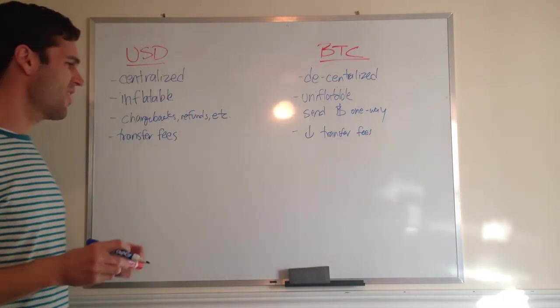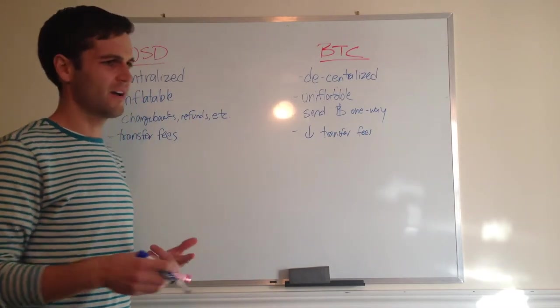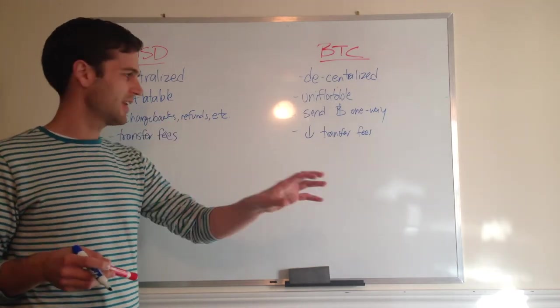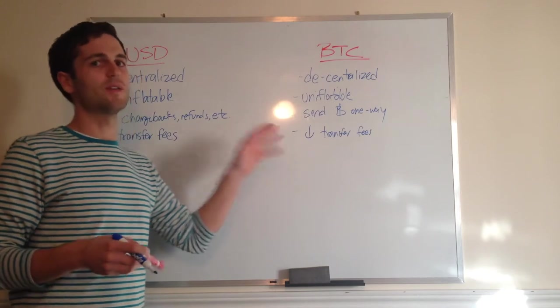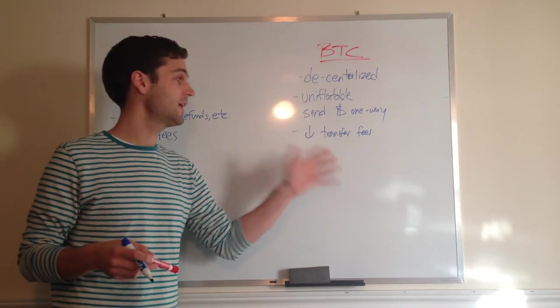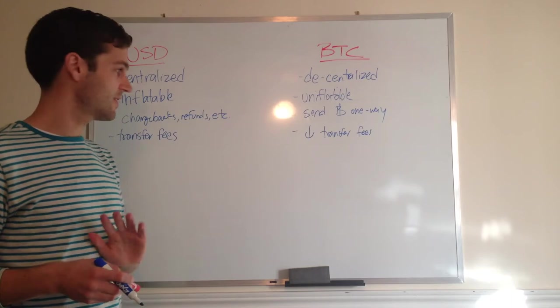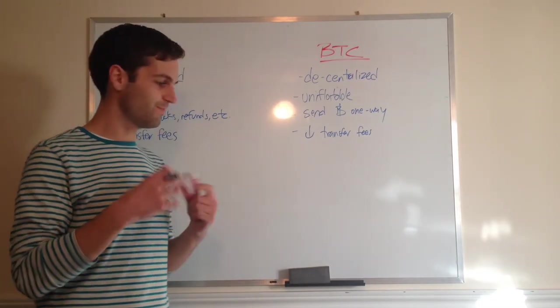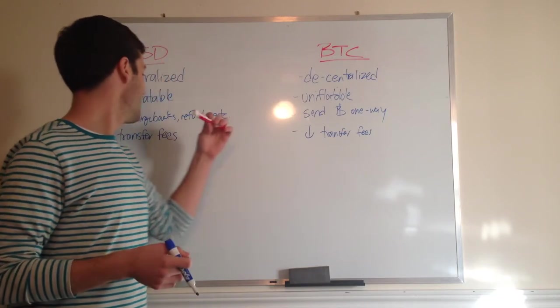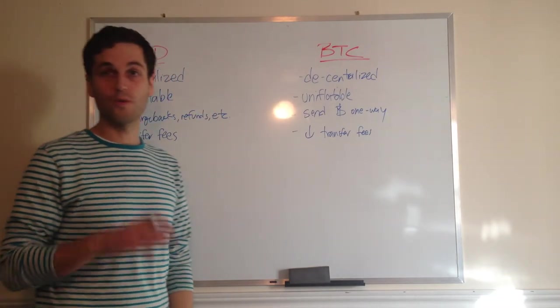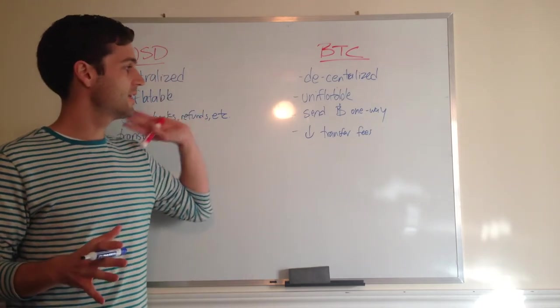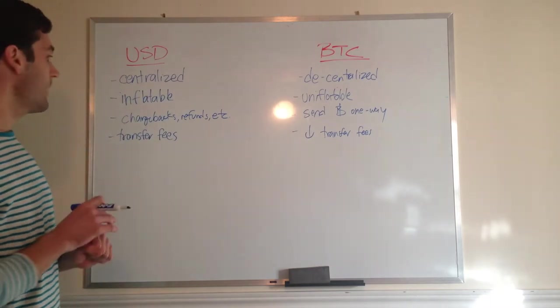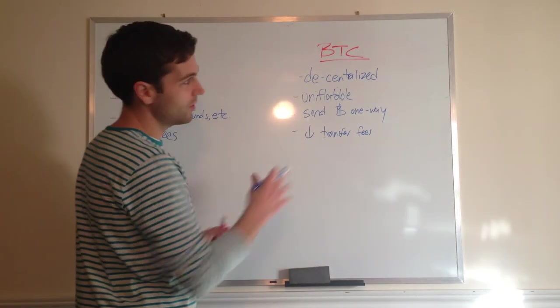Transfer fees are generally high with US dollars, whereas Bitcoin has very low transfer fees and it's very easy. You're not setting up a bank account or doing a wire going through all these intermediaries. Just like an email, you get their Bitcoin wallet address, their public key, and you send the money. With mobile phones, it's just QR codes and you're good to go.